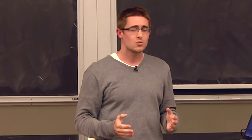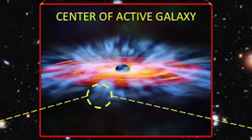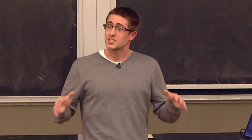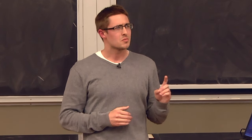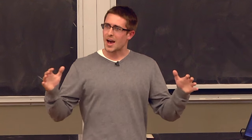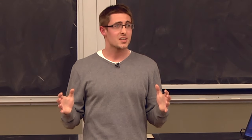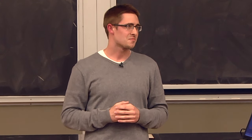What else do black holes do other than make stuff fall toward them? Black holes can also drive gas back into the galaxy in the form of a wind, shown here in blue. This process is just like an engine, which needs gas to make a car drive away. Is it possible that these winds travel out into the surrounding galaxy and change the galaxy's shape, size, and color? This is the question that my dissertation seeks to answer.